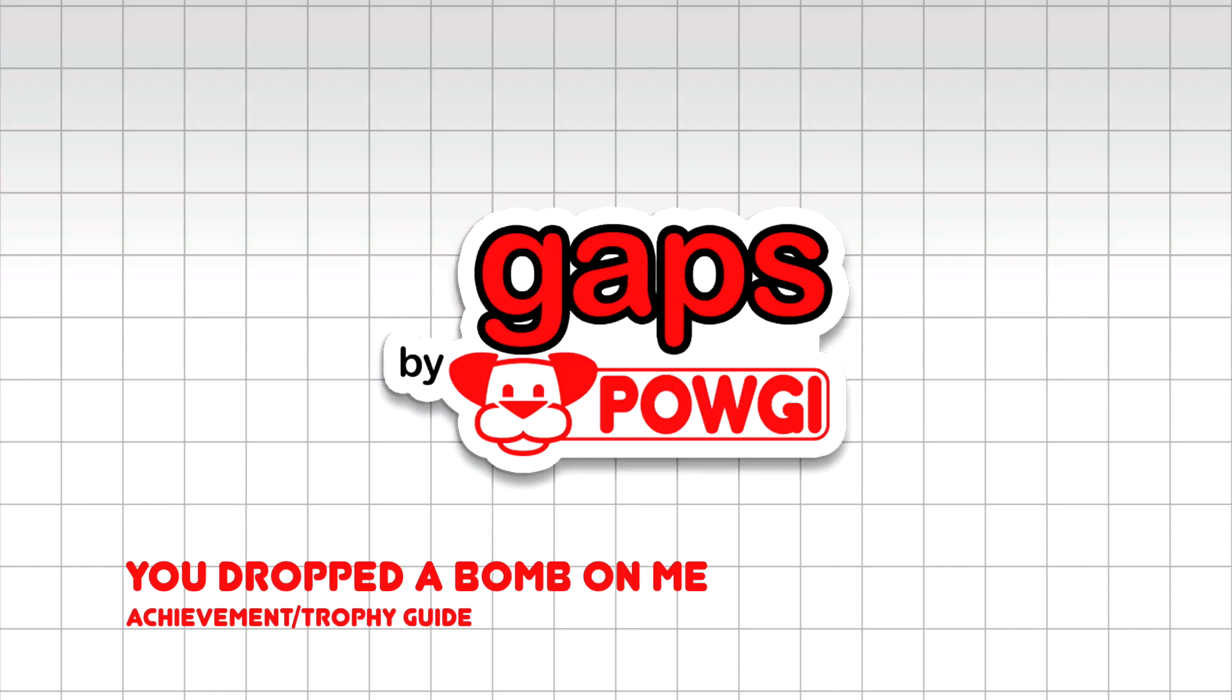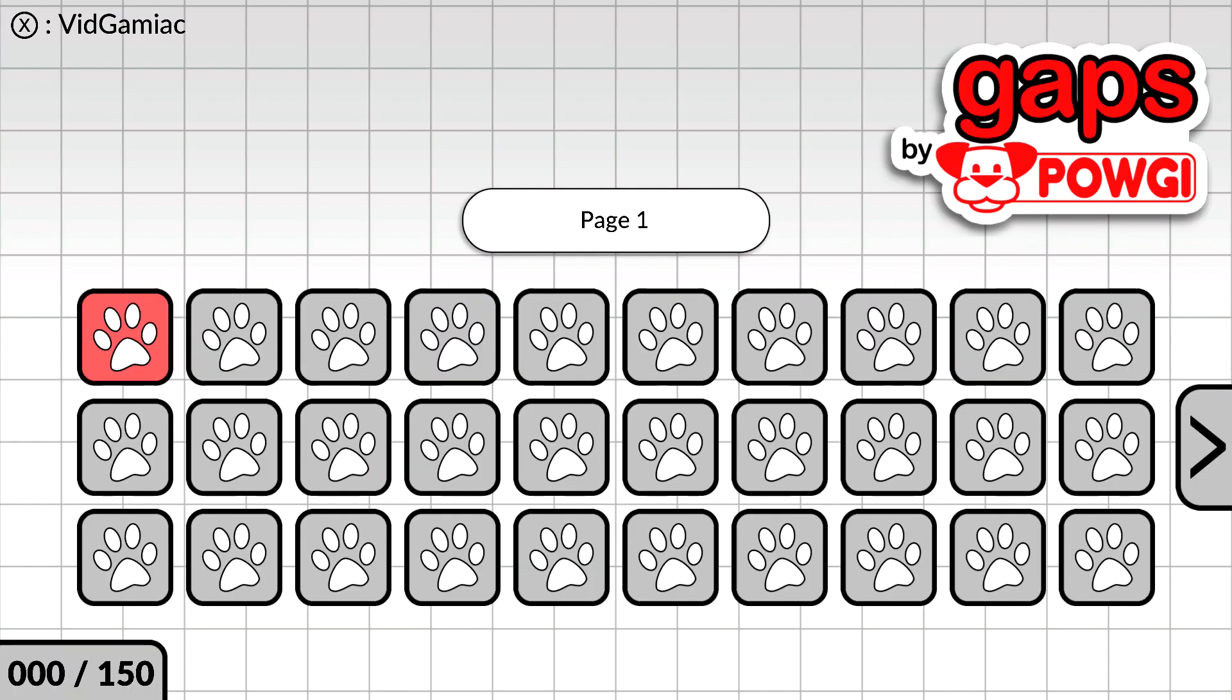Hey everybody, Sean here from thegimiac.com. Here we are today back in gaps, covering the You Dropped a Bomb on Me achievement. This is to fix eight mistakes at once.